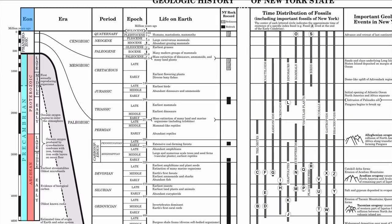The eon is the biggest unit of time. The Precambrian, which is divided into the Archean and the Proterozoic, makes up 88% of all geologic time on Earth — so it contains a lot of history. Unfortunately, Precambrian fossils are rare and difficult to find, because organisms that lived during this time were small and had no solid body parts, so they didn't imprint themselves in rocks. And any rocks that might have contained fossils have already been eroded, buried, converted to magma, or metamorphosed.